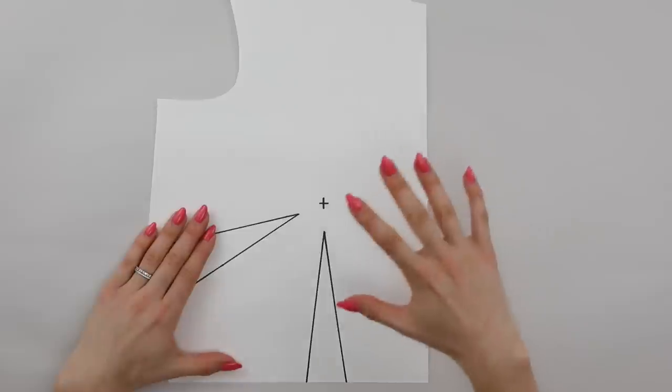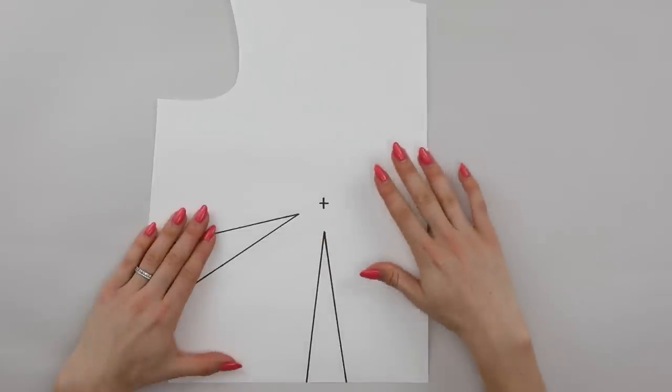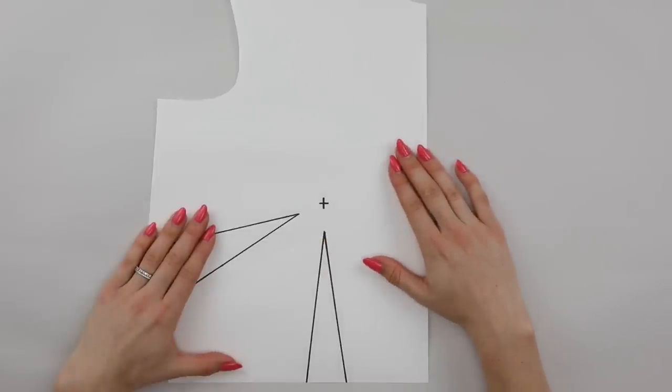Alternatively, you may have a pattern that has darts like this that you want to actually do a small bust adjustment to. So the first step is going to be to draw the lines.